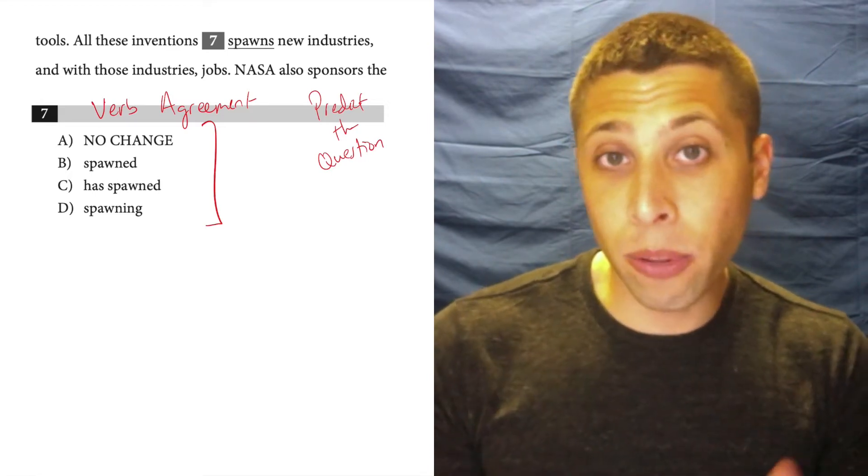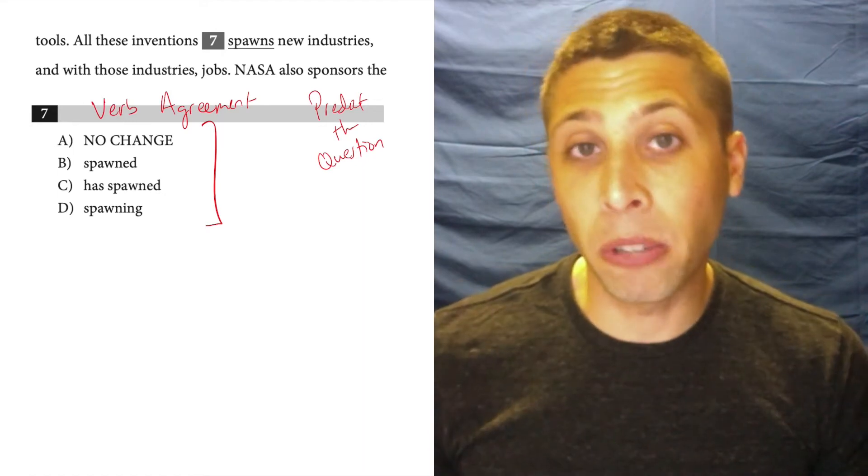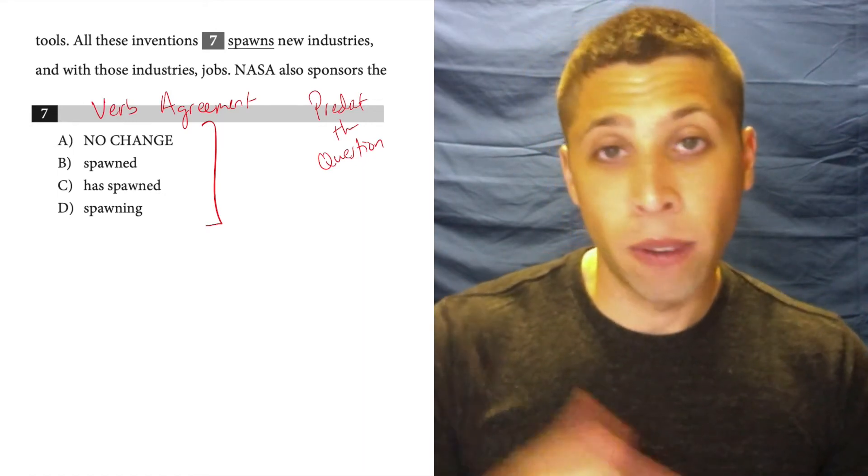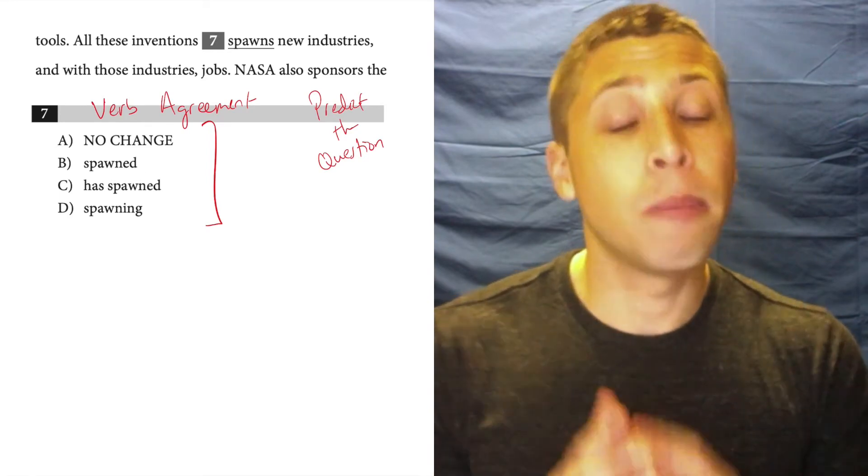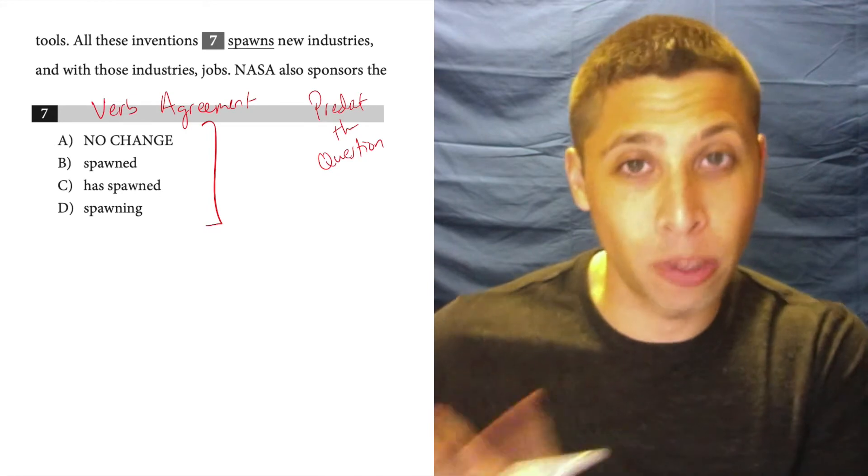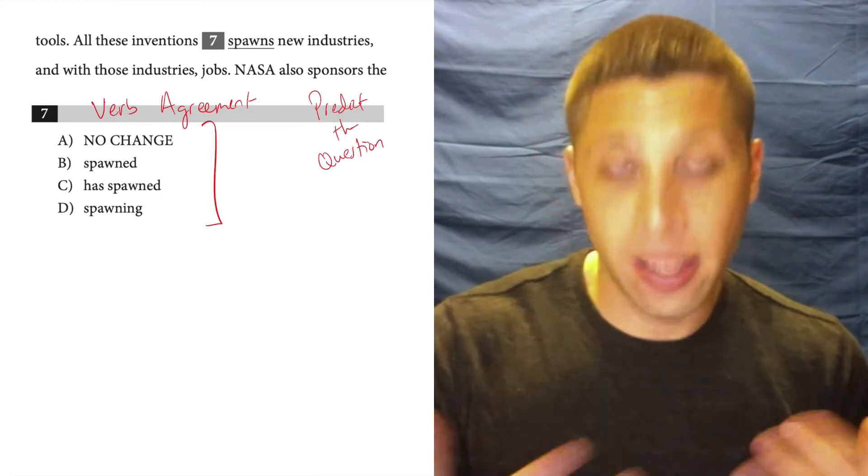Because if I know that it's probably about verb agreement, I need to think in terms of singular and plural, right? Verbs just like nouns can be singular and plural. And then when we have a singular verb, it needs to match with a singular subject. So that's what we're doing here.